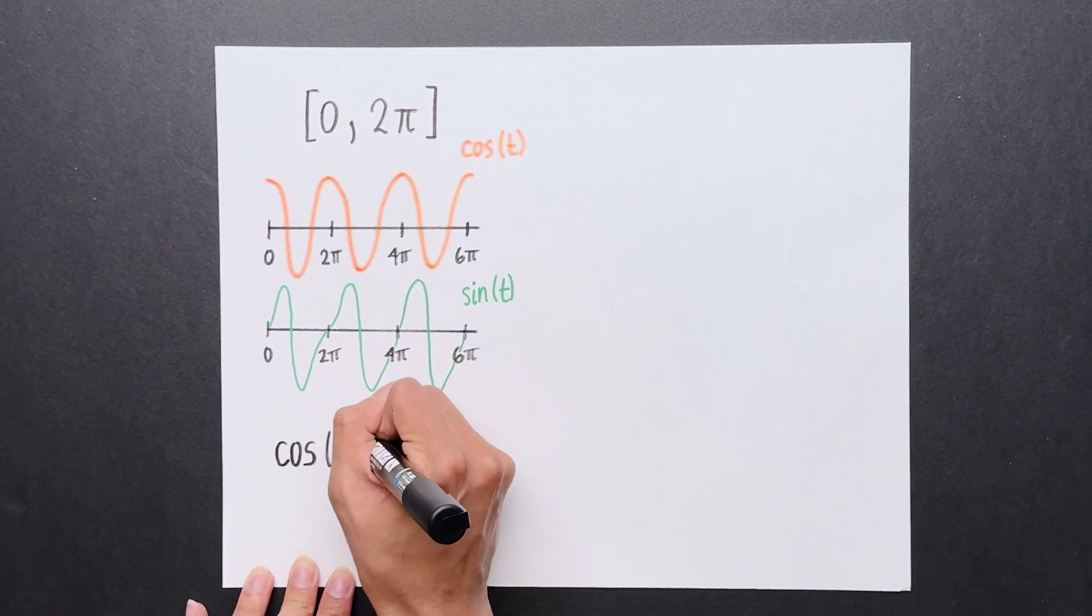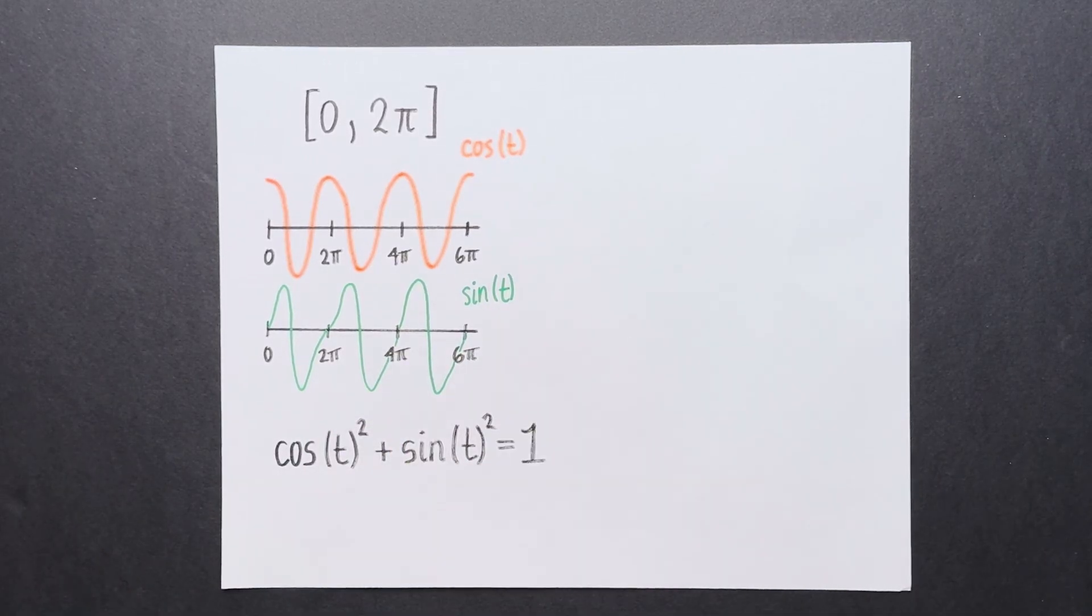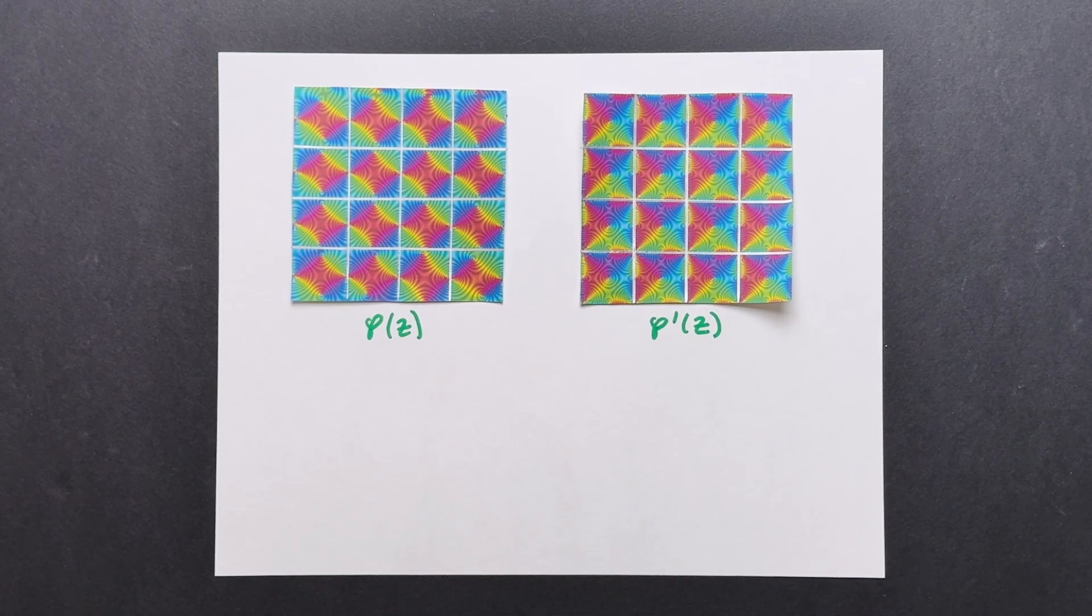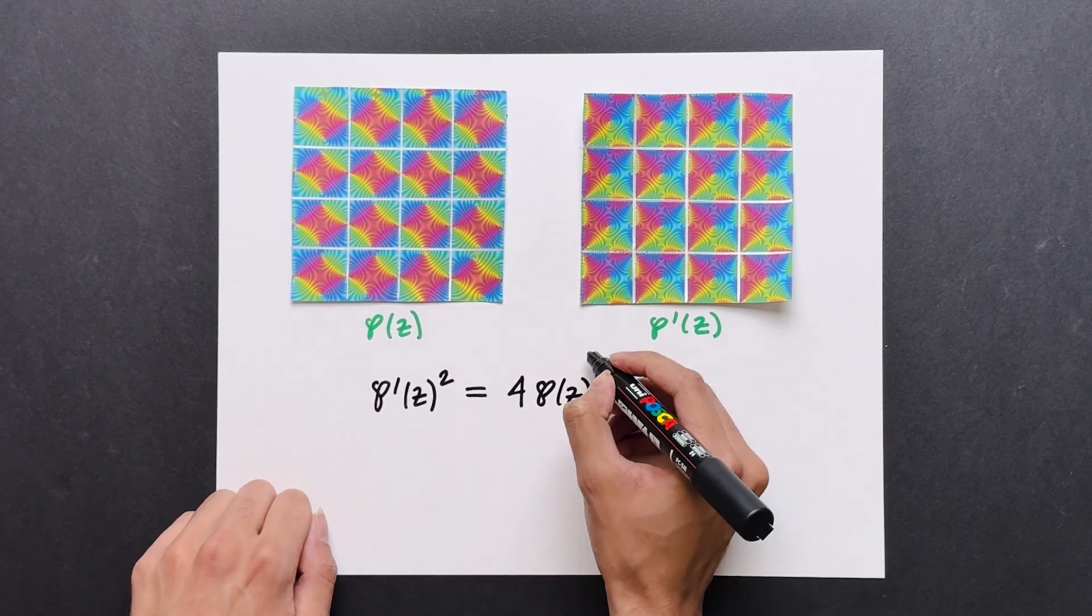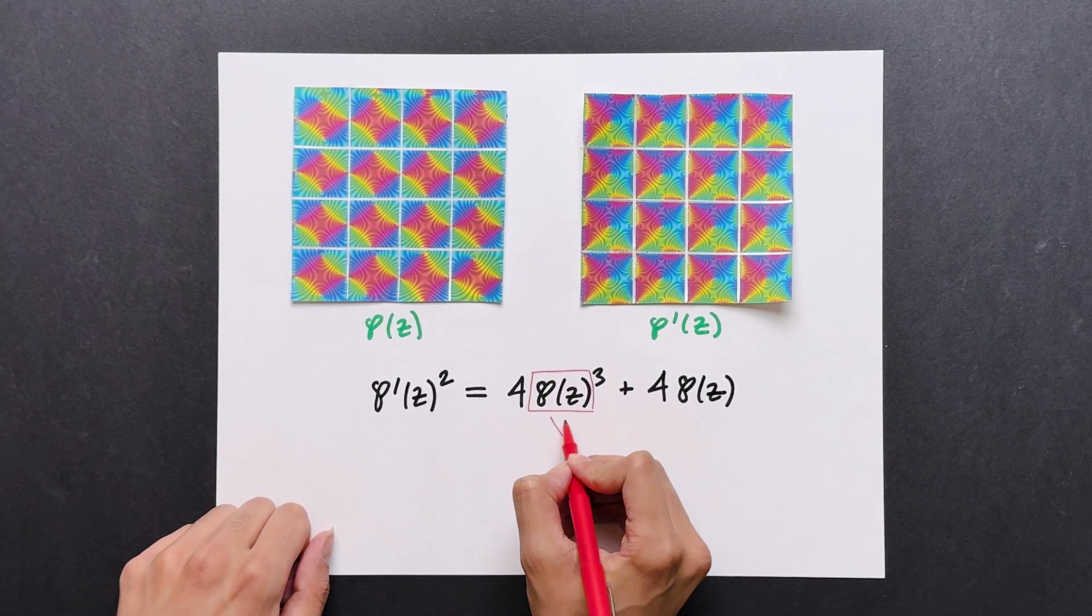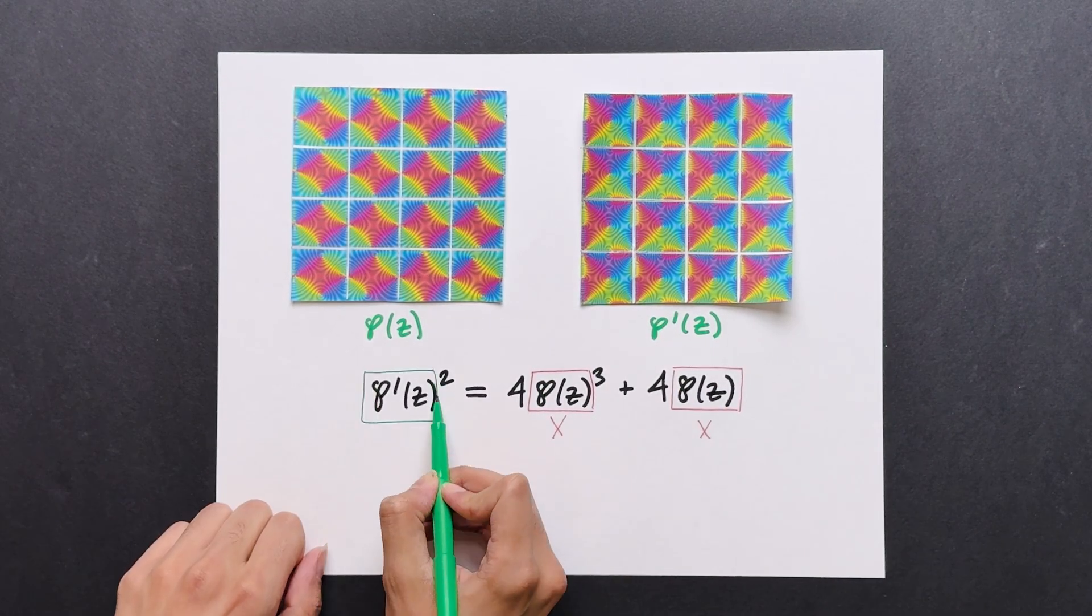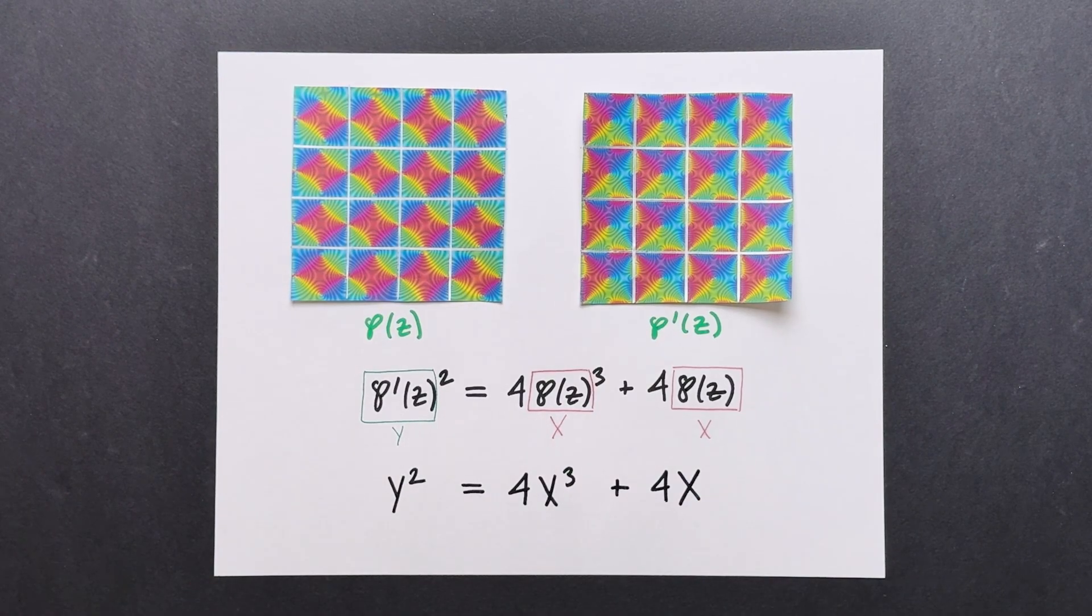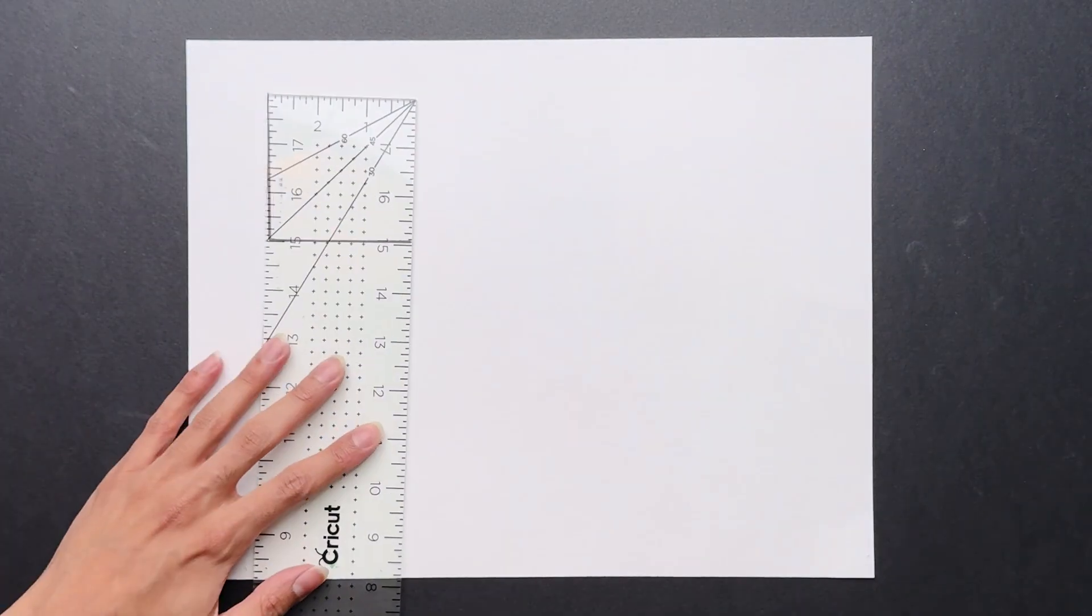Just like how sine and cos satisfy an algebraic equation, these two functions also satisfy an algebraic equation. But it's a bit more complicated. It looks like this. Let's call p of z, x. And let's call p prime of z, y. We get this equation.